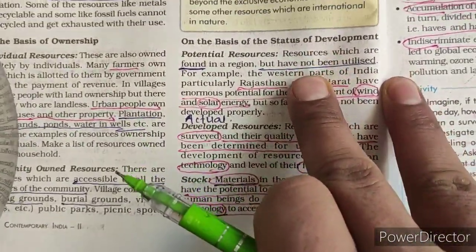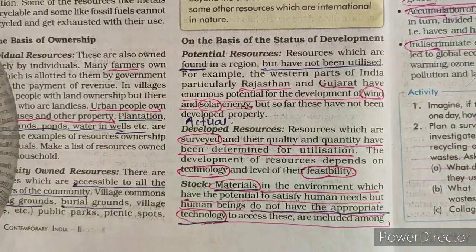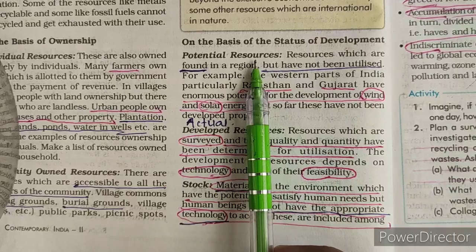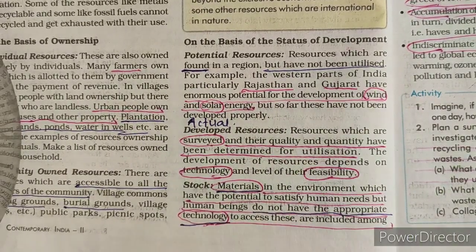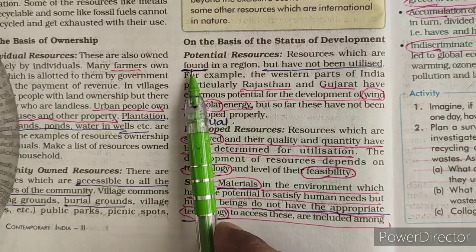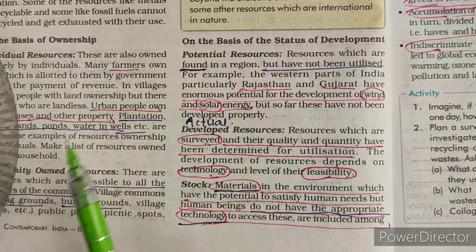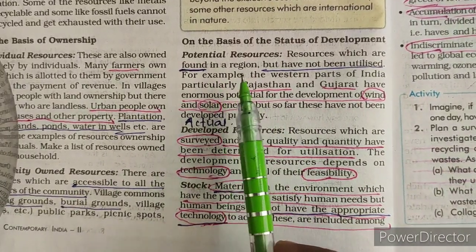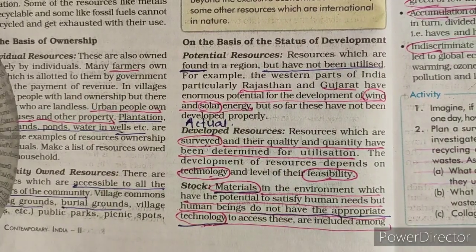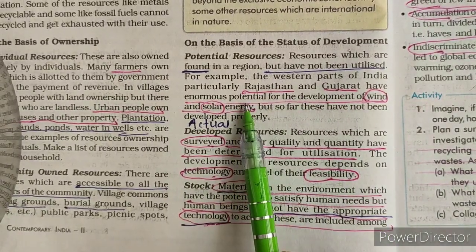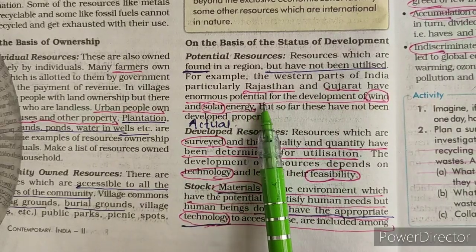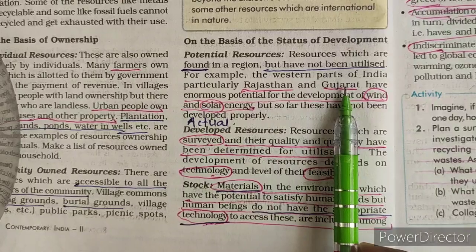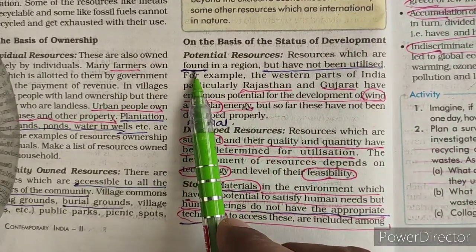The last category is on the basis of status of development. First is potential resources — those found in a region but not yet utilized. Resources are available but not utilized, and their quantity and quality are unknown. For example, Rajasthan and Gujarat have enormous potential for wind and solar energy development, but it is still not fully used.